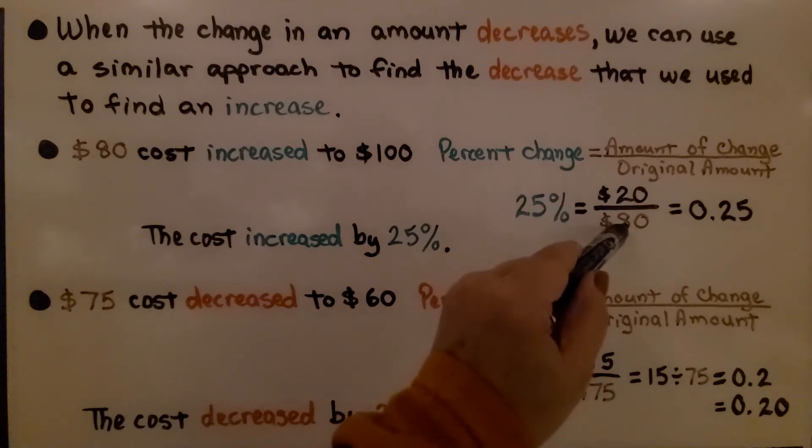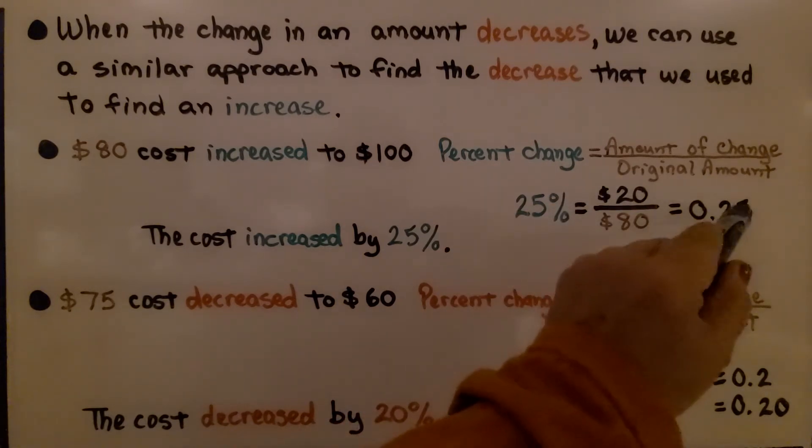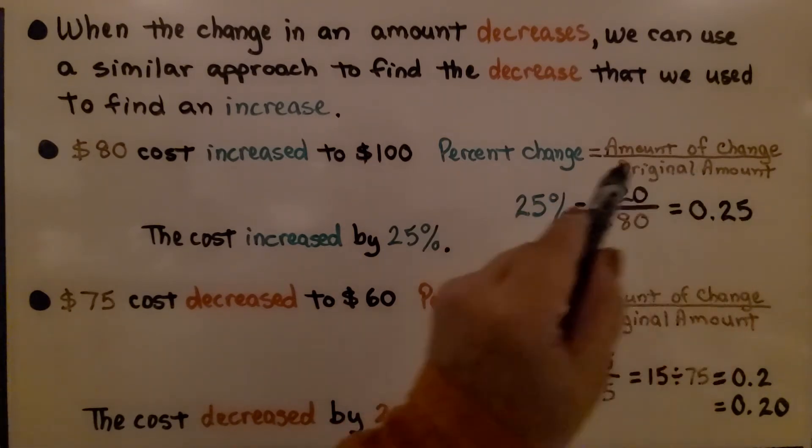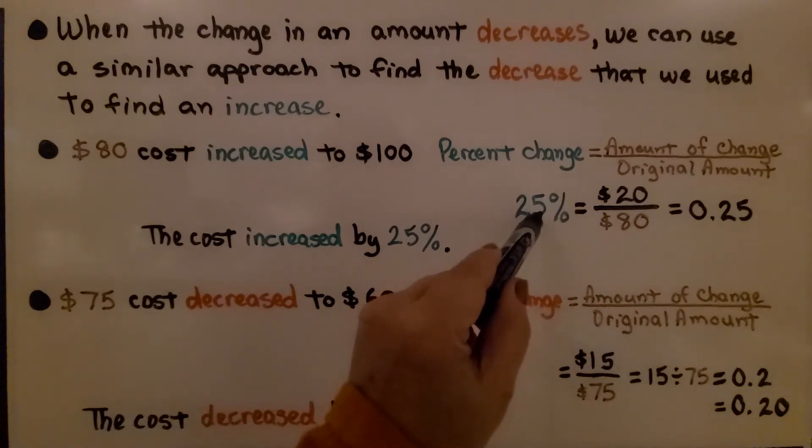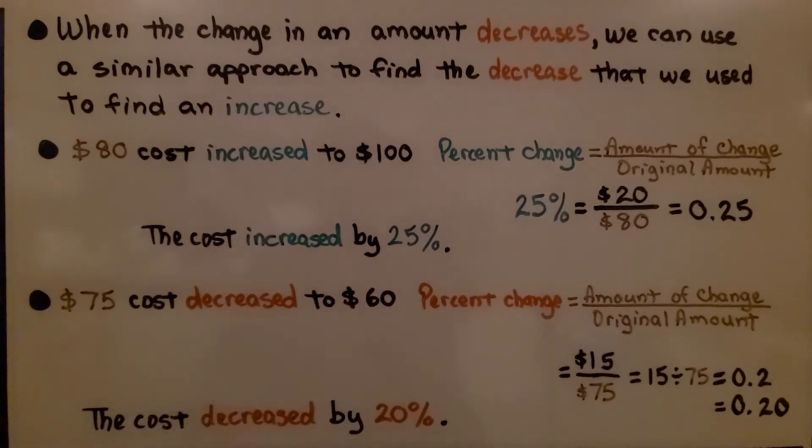20 divided by 80, that would be 0.25 as 25 hundredths. That would be a 25% increase. The cost increased by 25%.